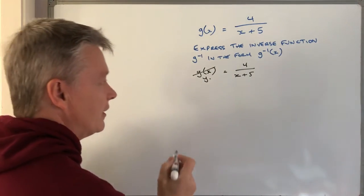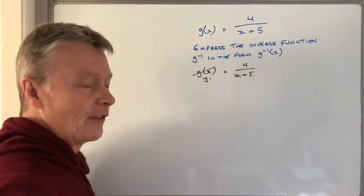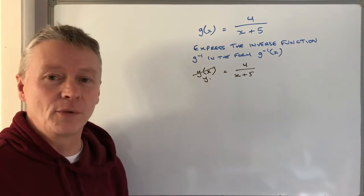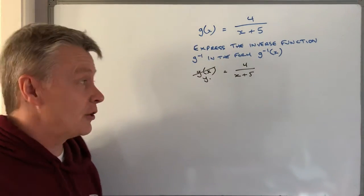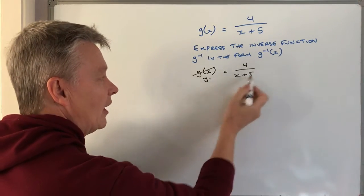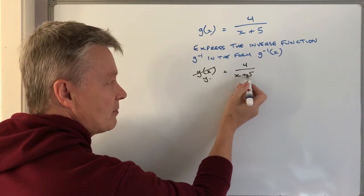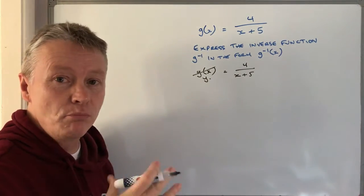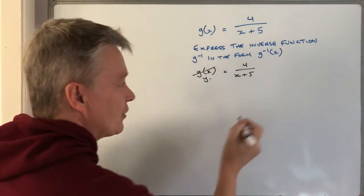The whole idea behind it is we need to get x on its own, so we're changing the subject of the equation. In this case, I'm going to multiply both sides by x+5.